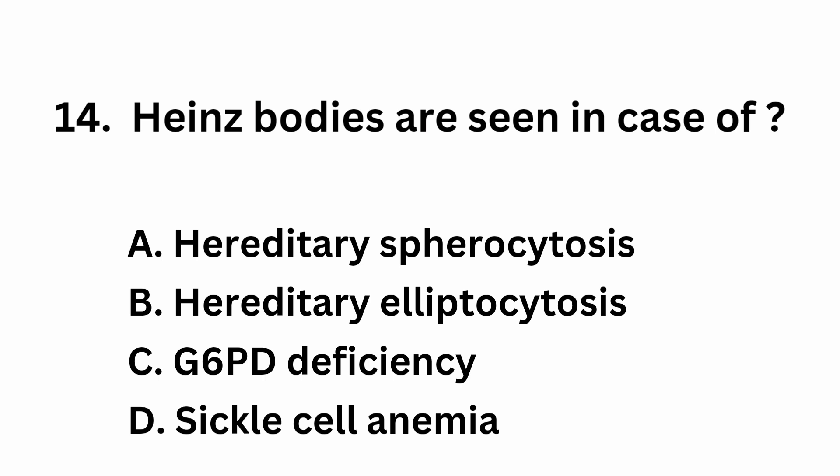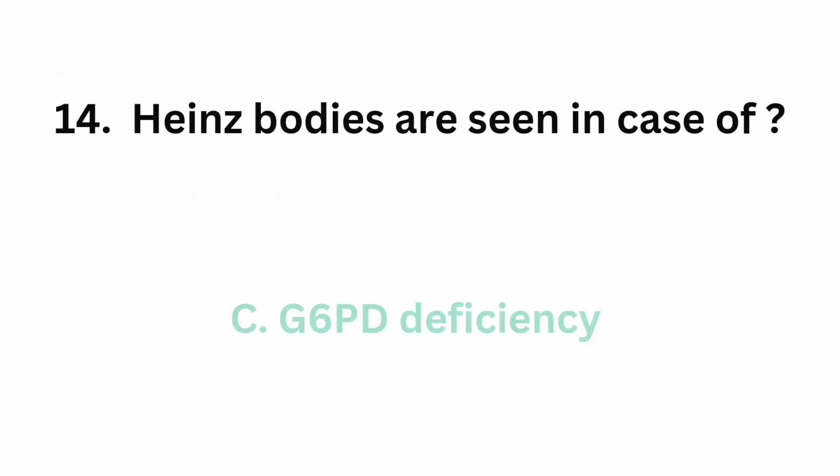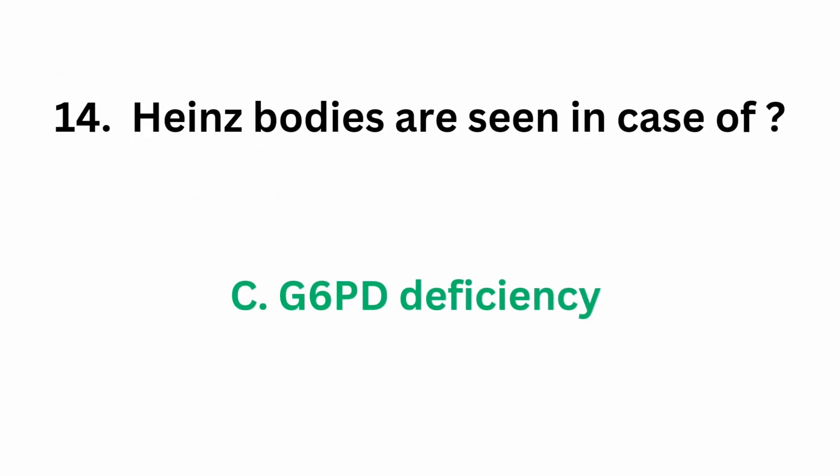Question number 14: Hen's bodies are seen in case of. Option A, hereditary spherocytosis. Option B, hereditary elliptocytosis. Option C, G6PD deficiency. Option D, sickle cell anemia. The correct answer is option C, G6PD deficiency — glucose-6-phosphate dehydrogenase deficiency.